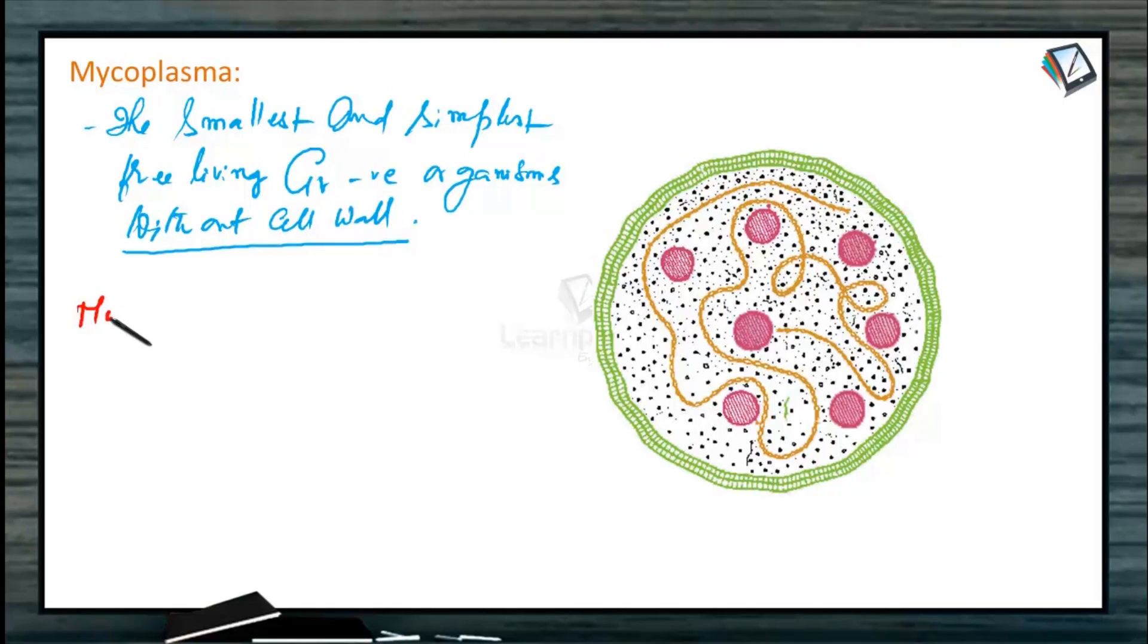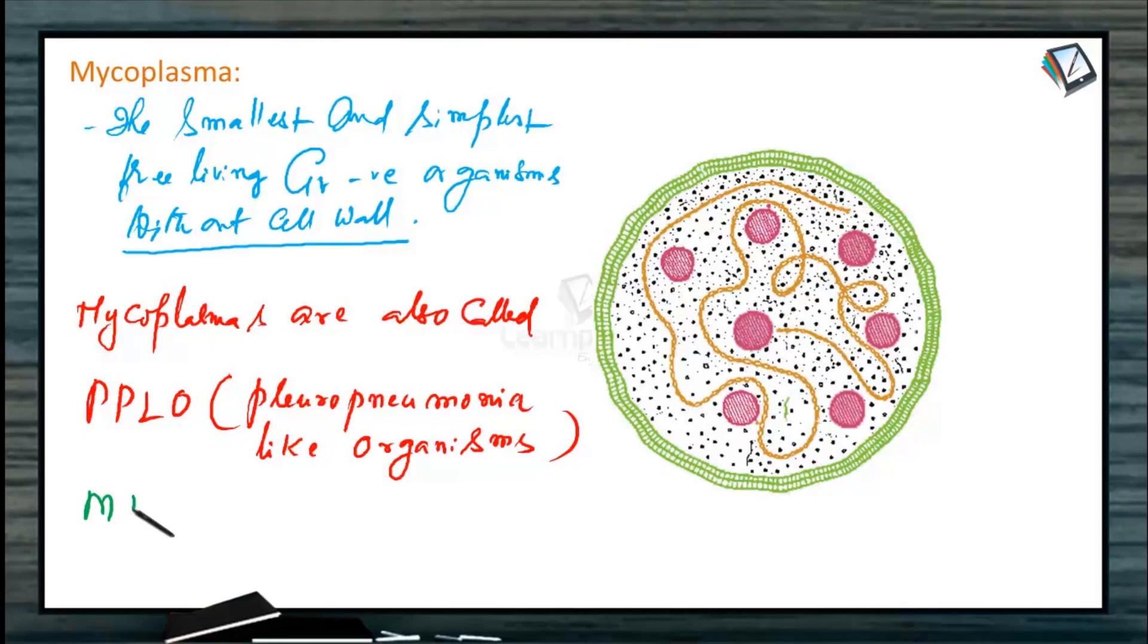Mycoplasmas are also called PPLO, means pleuro-pneumonia-like organisms. They are also called MLO, means mycoplasma-like organisms.